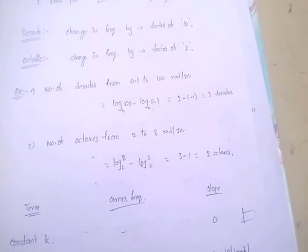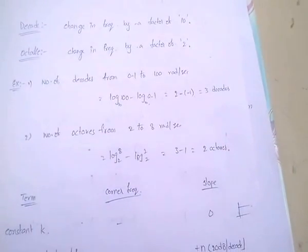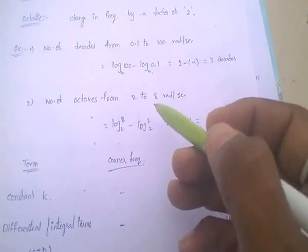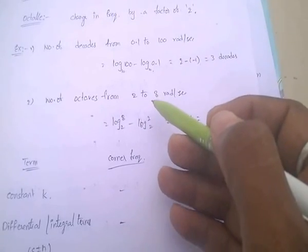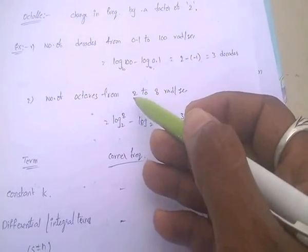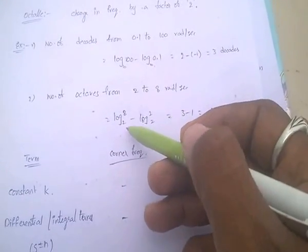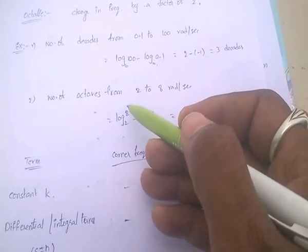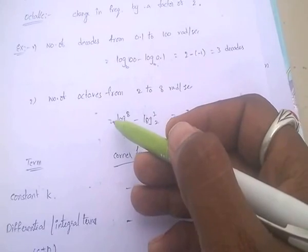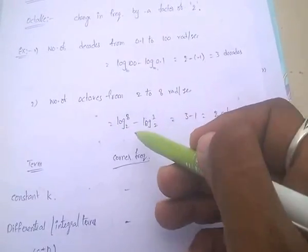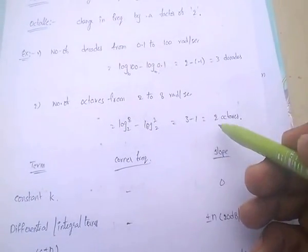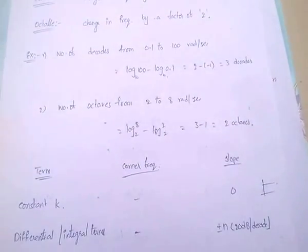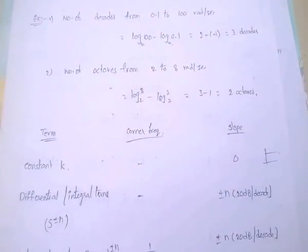Number of octaves from 2 to 8 radian per second: log(8) base 2 minus log(2) base 2. Log(8) base 2 means 3, since 2 cubed equals 8, so 3 log(2) base 2 equals 3. Then 3 minus 1 equals 2 octaves. Number of octaves from 2 to 8 radian per second are 2 octaves.